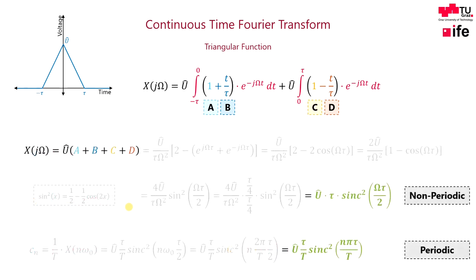However, I want to discuss the result of this calculation. With the triangular function we will obtain the sinc function squared. This means that the amplitude of the frequency spectrum will decrease with 40 decibels per decade after its corner frequency.